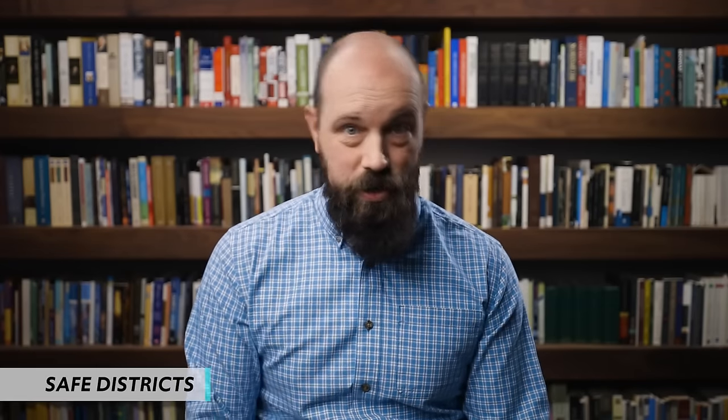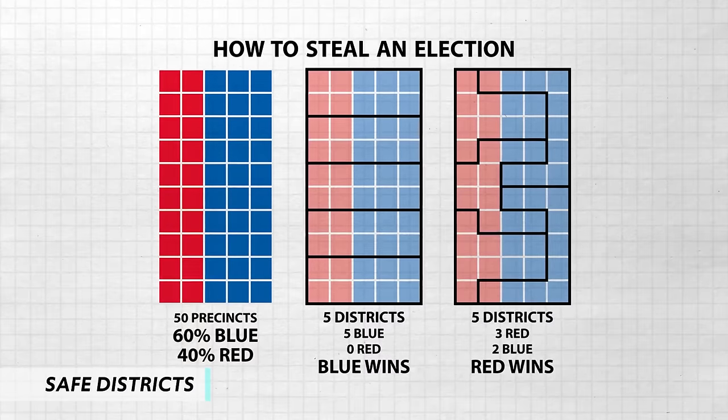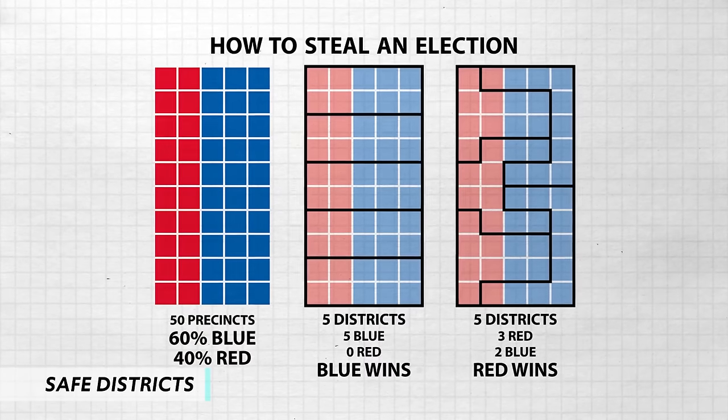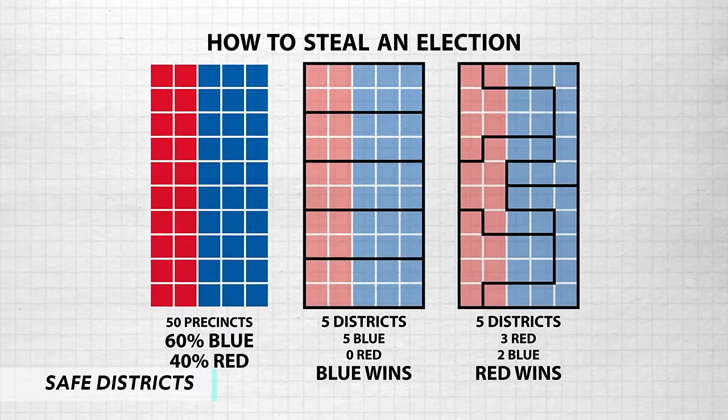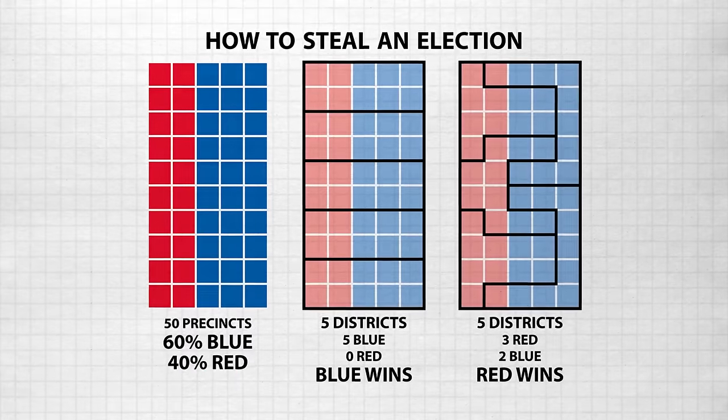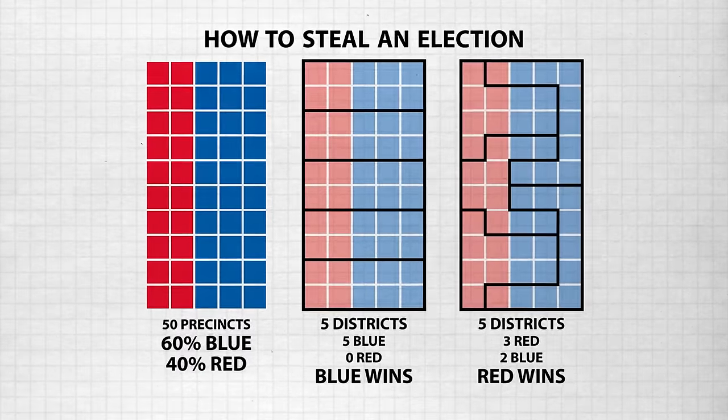And maybe most helpful of all, incumbents have the advantage of safe districts. Congressional representatives in the House gerrymander their districts in order to assure re-election. Wait — isn't that illegal? Yep, but it happens nonetheless.